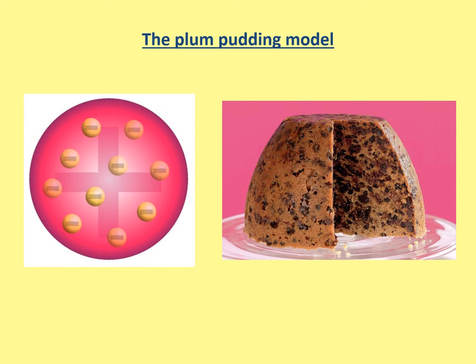They weren't wrong to think this at the time, because that's what they thought based on the information they had. The way science works is: once you do an experiment and find it definitely couldn't look like this, you change your model and it adapts very slightly.